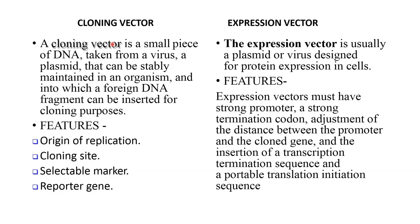A cloning vector is a small piece of DNA taken from a virus or a plasmid that can be stably maintained in an organism, and into which a foreign DNA fragment can be inserted for cloning purposes. Its features consist of an origin of replication, cloning site, selectable marker, and a reporter gene.